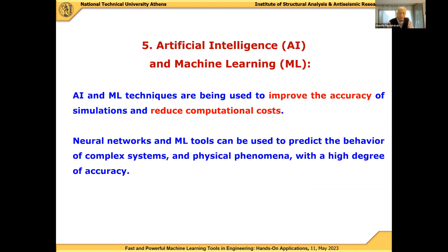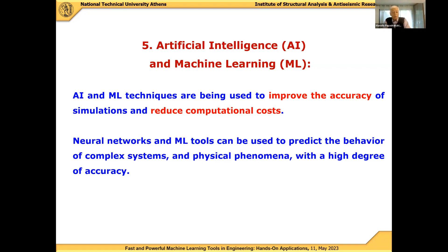Artificial intelligence and machine learning — the main topic of this workshop — are a very important pillar in this effort. They are being used to improve the accuracy of simulations and reduce computational costs by orders of magnitude compared to conventional simulation methods. Neural networks and machine learning, as you will hear from the speakers of this workshop, can be used to predict the behavior of complex systems and physical phenomena with a high degree of accuracy.